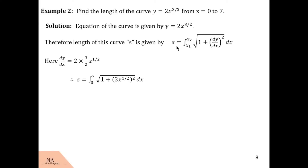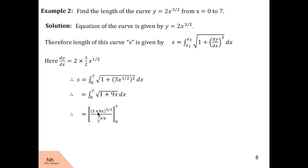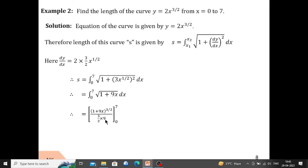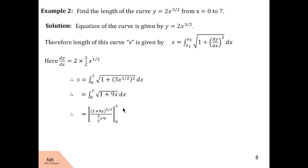Therefore s can be written as the integral from 0 to 7 of under root(1 + (3x^(1/2))²) dx. Since 3² = 9 and (x^(1/2))² = x, we have the integration of under root(1 + 9x) dx. Its value is (1 + 9x)^(3/2) divided by (3/2) times the derivative of (1 + 9x), which is 9, over the limit 0 to 7. After substituting these limits, the answer is 1022/27.